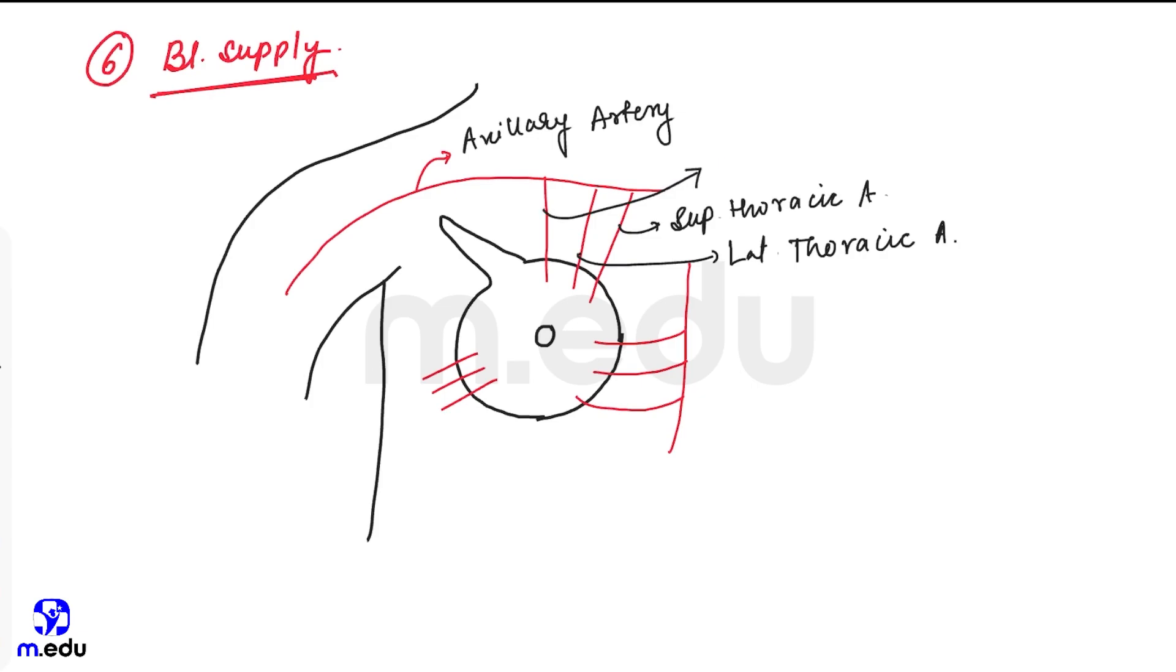This is acromiotothoracic artery, intercostal artery, and perforating branches of internal thoracic artery. Next heading: nerve supply.